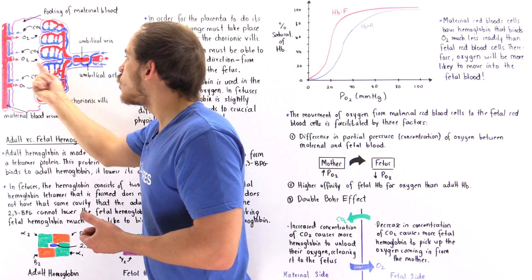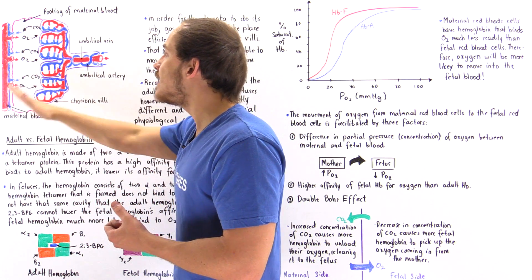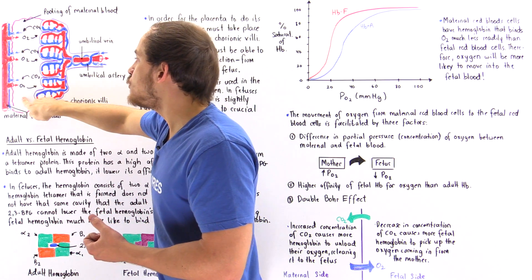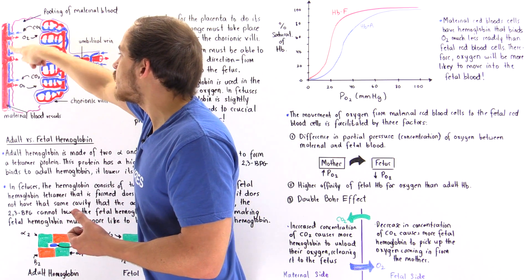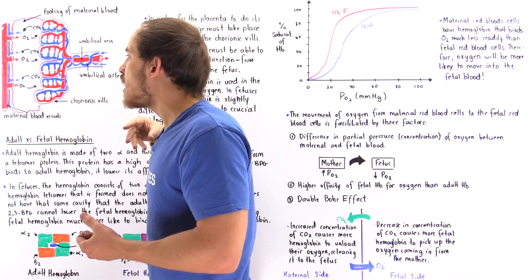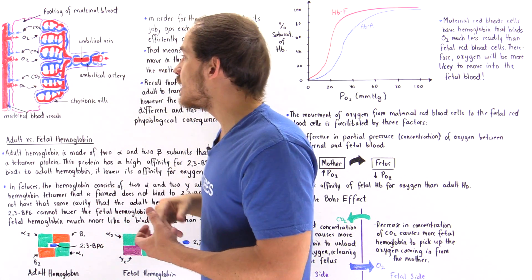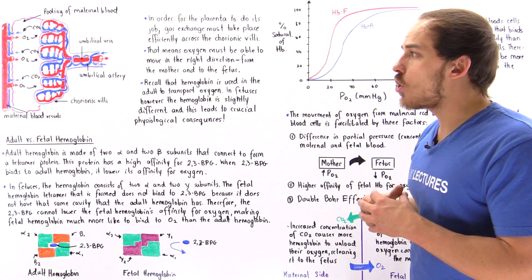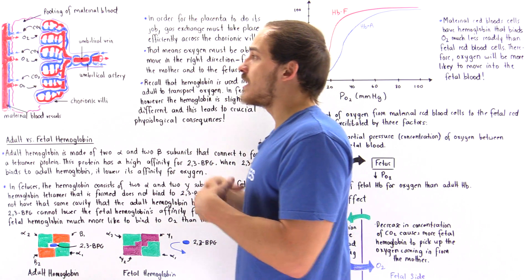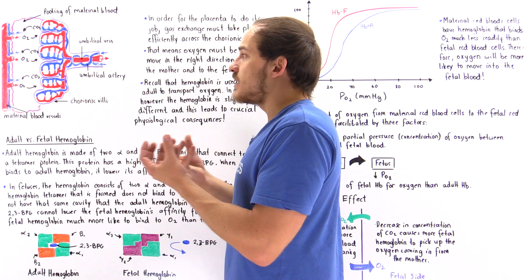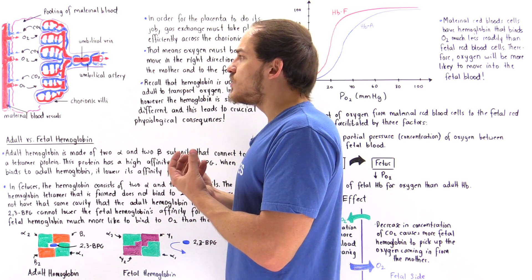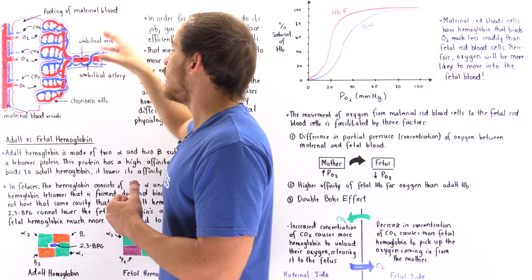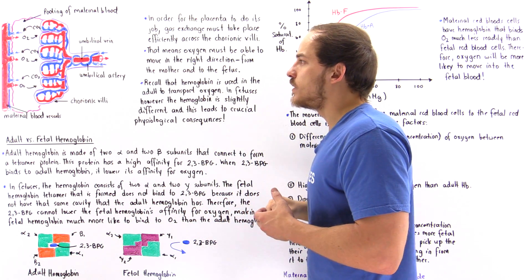Oxygen moves down its concentration gradient from the pool of maternal blood into the capillaries of the fetus. At the same time, carbon dioxide is deposited out of the fetal capillaries into the pool of blood, eventually picked up by maternal blood veins and carried to the mother's lungs, which expel the carbon dioxide. When the lungs inhale, they bring in oxygen, which is ultimately brought into the maternal blood pooling area.